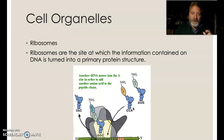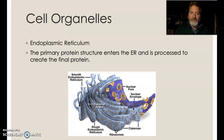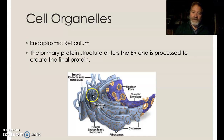Ribosomes are tiny little protein structures that help us create our proteins — that's where protein making starts. The endoplasmic reticulum is where proteins are processed from their primary structure into a tertiary structure, so it's a functioning protein that leaves the ER. We have smooth and rough ER — rough ER is covered with ribosomes and smooth ER has none.